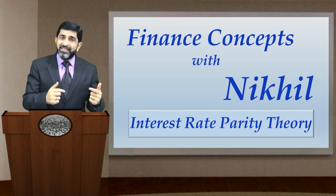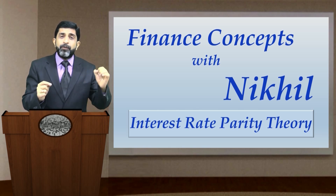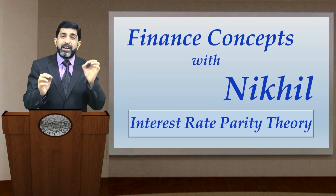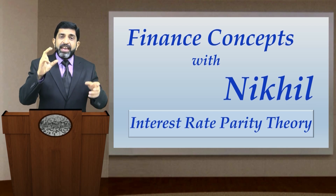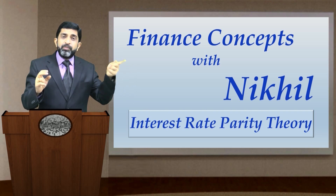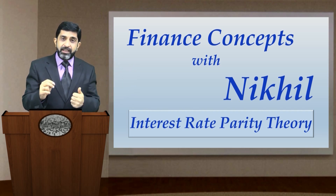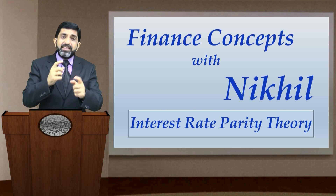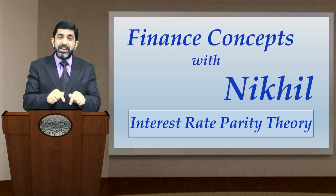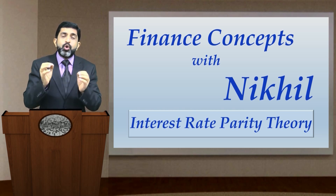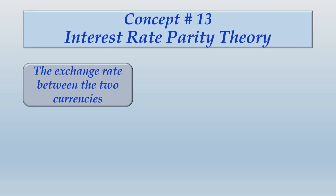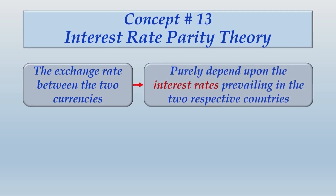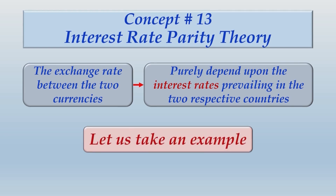In earlier Forex classes, when we learnt how to determine the fair forward rate using the FFR formula, we took the spot rate multiplied by 1 plus the local interest rate, divided by 1 plus the foreign interest rate. This connects interest rate differences with exchange rates. In summary, exchange rates between two currencies purely depend upon the interest rates prevailing in the two respective countries.